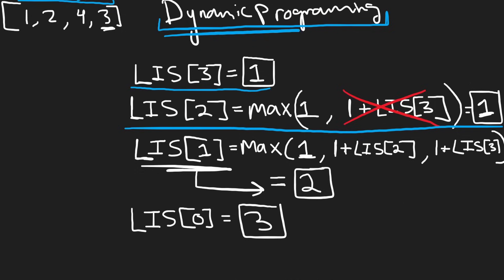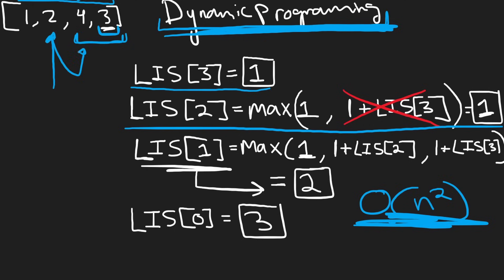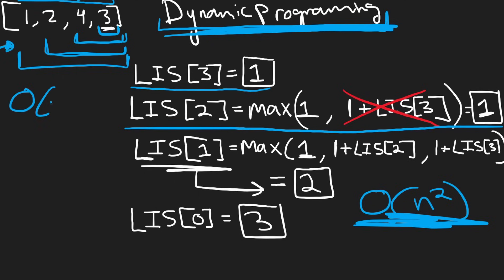This dynamic programming solution is much better than brute force because the time complexity is O(n²). Why is it O(n²)? We're working backwards — we start at the last index and check every position afterwards. When we start at each index, we iterate through every value that comes after it. This pattern of iterating through each element and all elements after it is similar to an n² pattern.